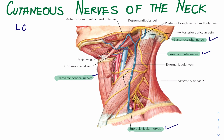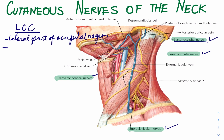First, the lesser occipital nerve. The lesser occipital nerve hooks around the accessory nerve and ascends along the posterior border of the sternocleidomastoid muscle to supply the skin over the lateral part of the occipital region and the medial surface of the auricle.